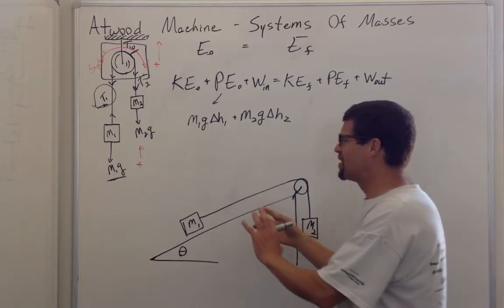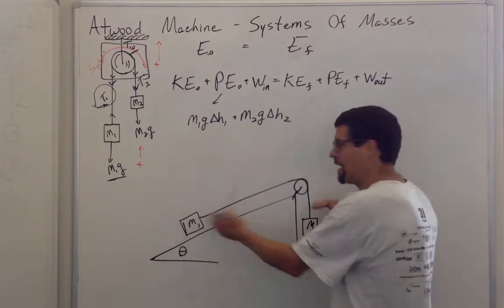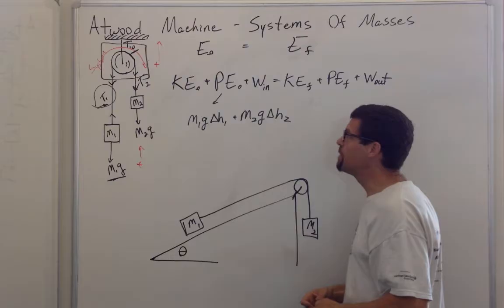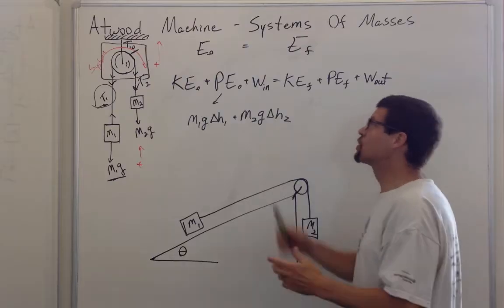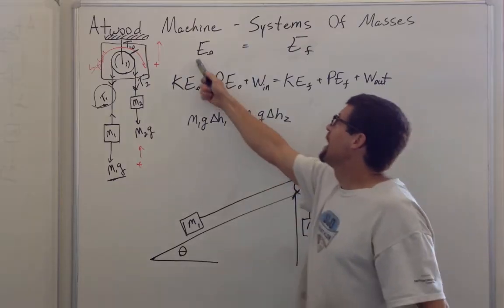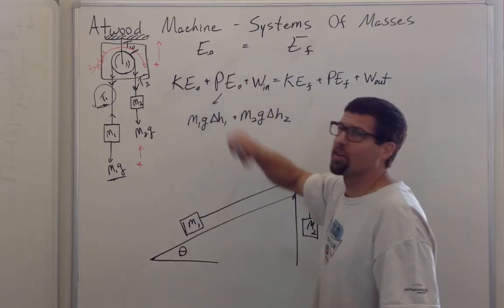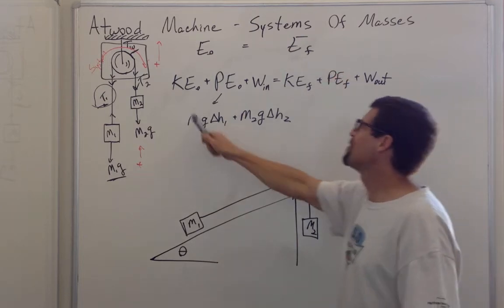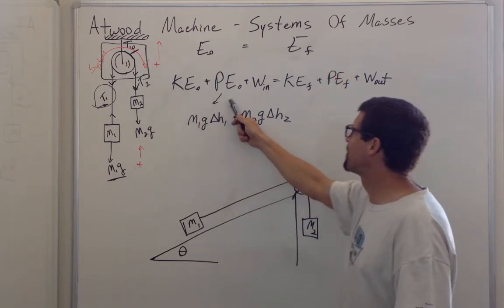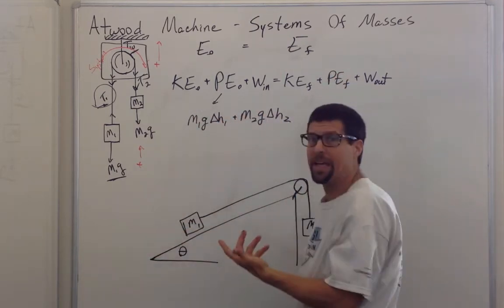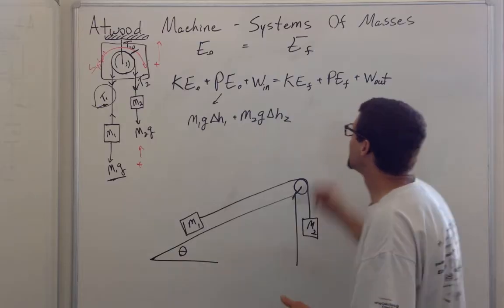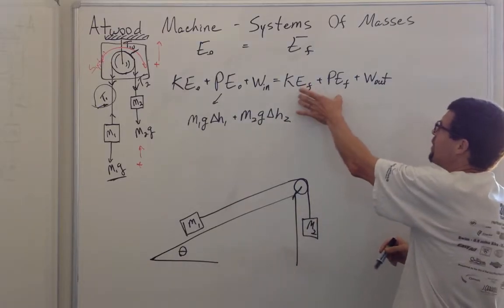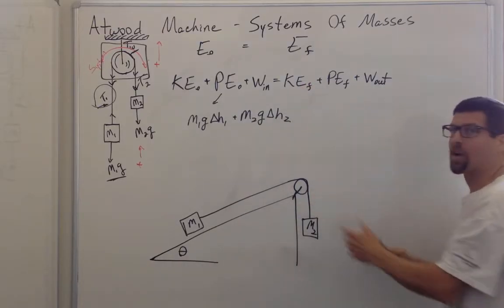Rather than just say the change in potential energy is going to be converted to a change in kinetic energy, you might just go right in and say the total initial energy is equal to the total final energy. And that can be kinetic plus potential plus the work that I put in, equal to the kinetic and potential final plus the work out.